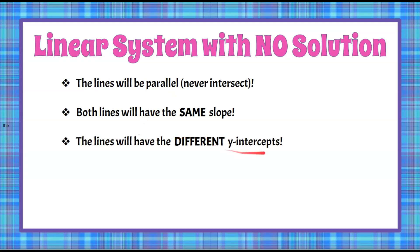The lines will have different y-intercepts. If they had the same slope and same y-intercept, they'd be the same line, and you wouldn't have no solution. You'd have infinitely many solutions because all points would be intersecting on the line. So same slope, different y-intercepts tells us we have parallel lines, and that is a linear system with no solution.